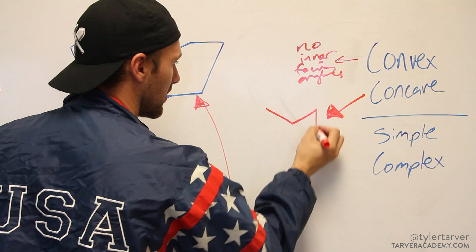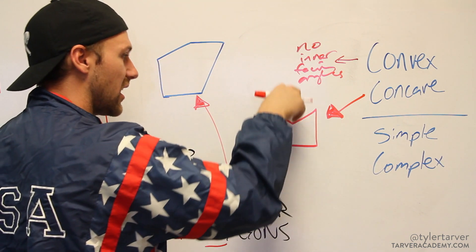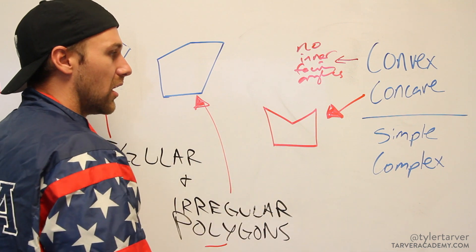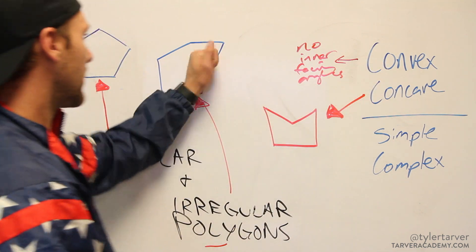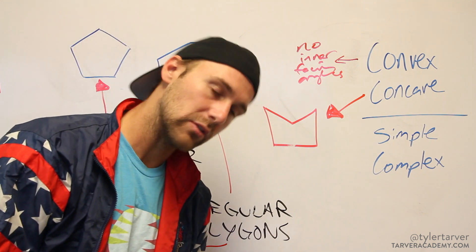That's a concave polygon because you have an inward facing angle. So convex: no inward facing angles. Concave: inward facing angles.